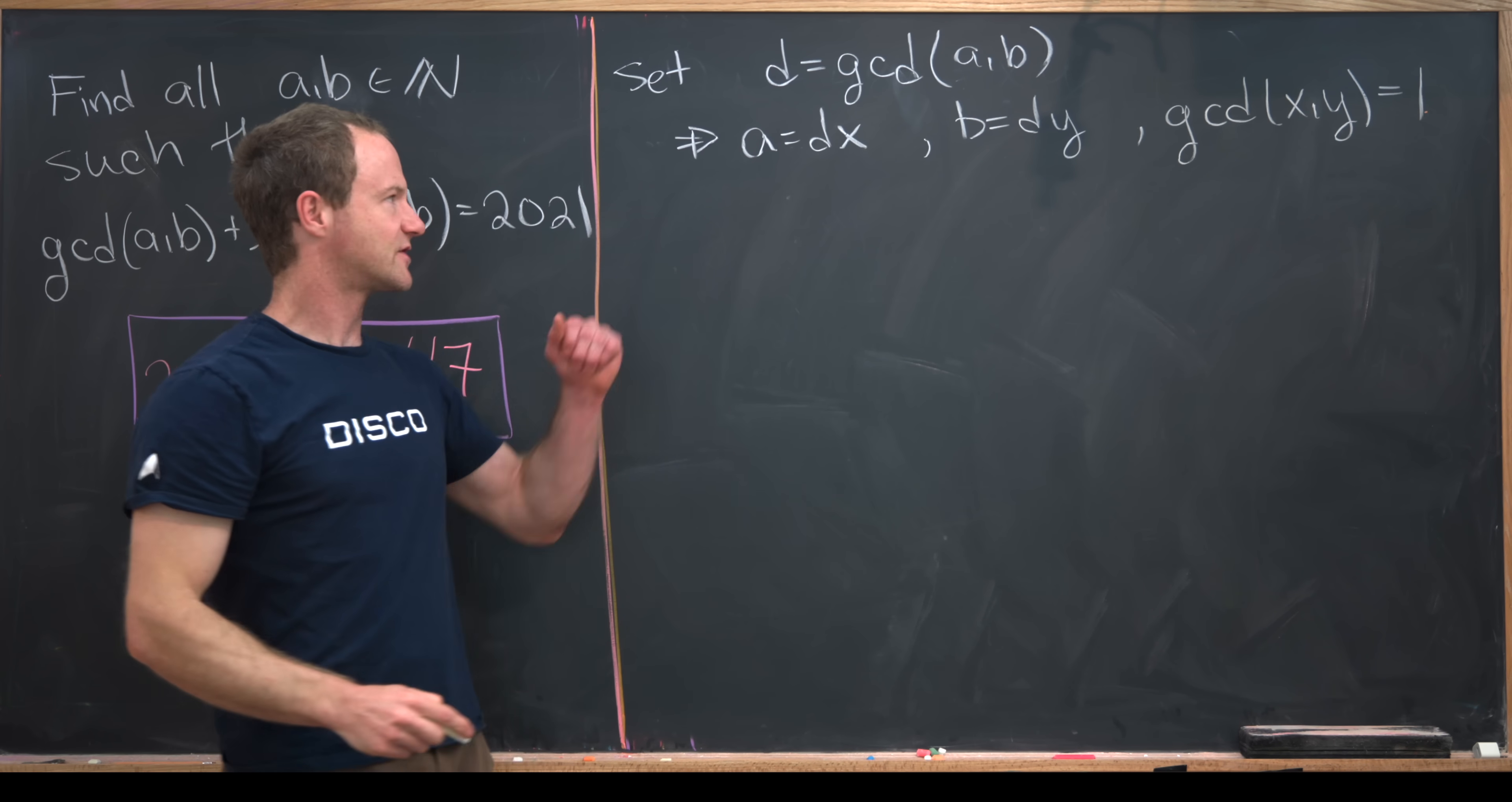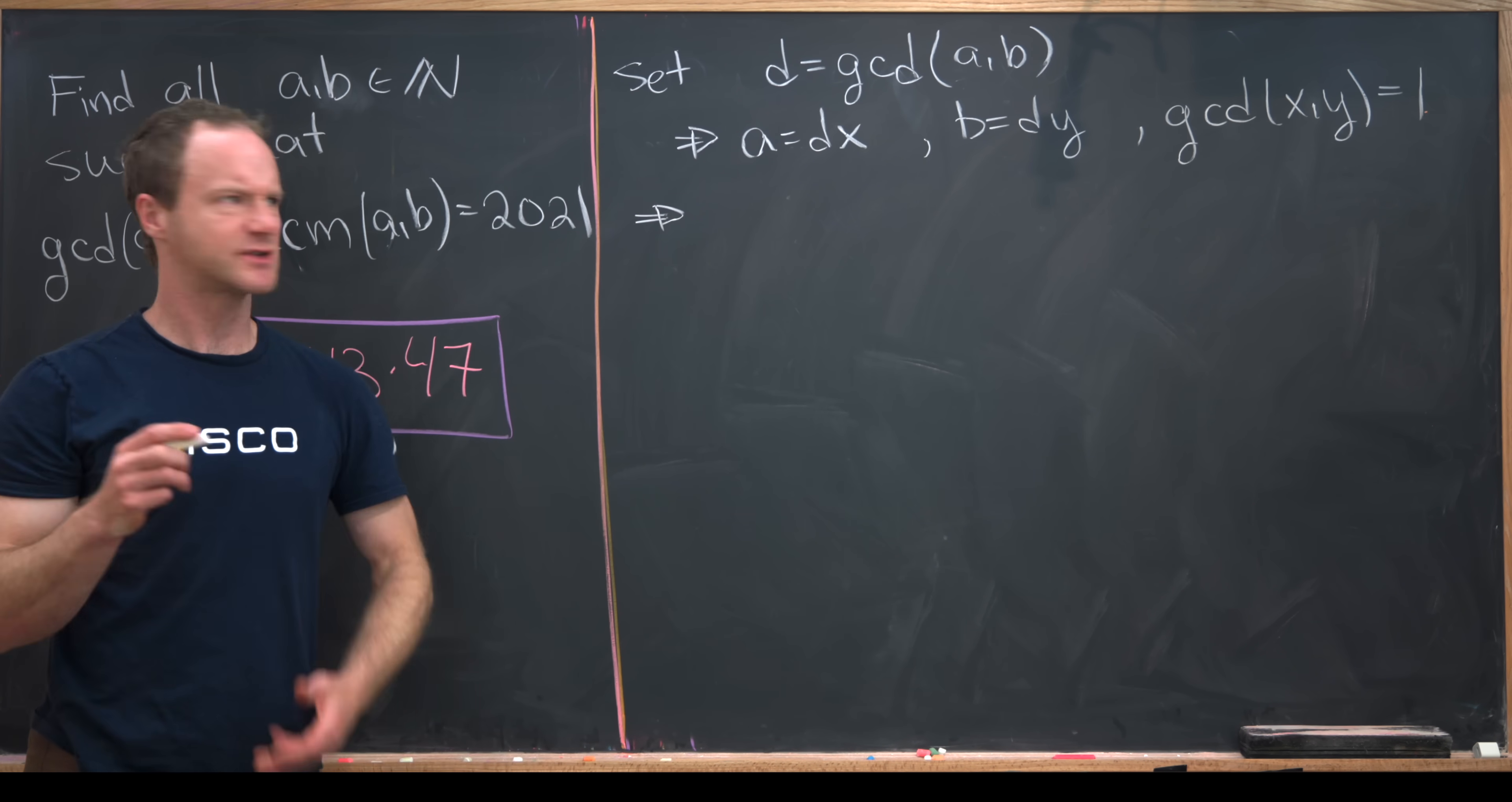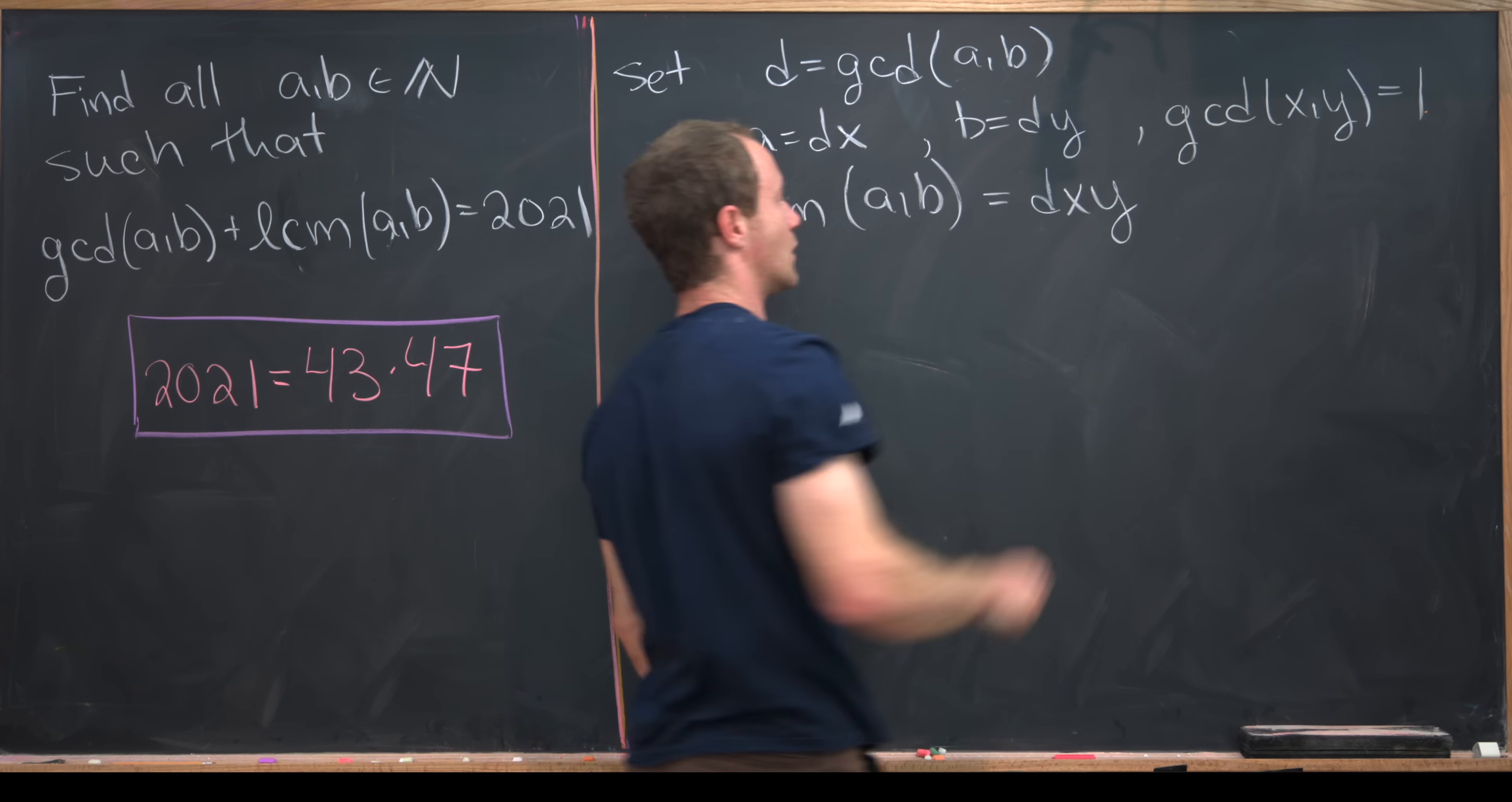We factored out as much as we can from A and B that is common. Now that we've got this setup, it's easy to write the LCM of A and B in terms of this D, X, and Y. The LCM of A and B under this setup is equal to D times XY.